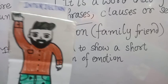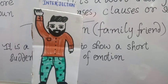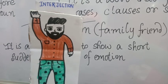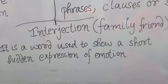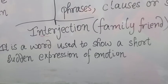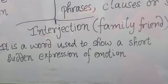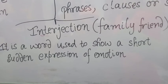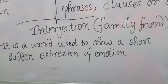Hello everyone, I am Interjection, a family friend of the grammar family. I join all the family members in times of joy or sorrows. It is a word used to show a short, sudden expression of emotion. For example: 'Wow, what a beautiful picture it is!' and 'Alas, I am undone.'